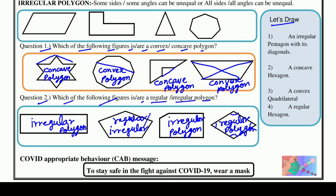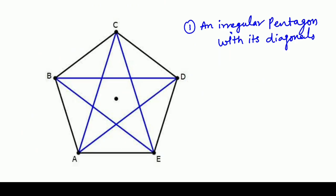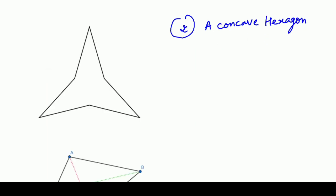Now let's draw these four figures. An irregular pentagon with its diagonals — this is your first answer; this is an irregular pentagon. This is your second answer: a concave hexagon. Concave means the diagonals go to the exterior — the shape may be bent inward. This point, this point, and this point will form the concave hexagon.